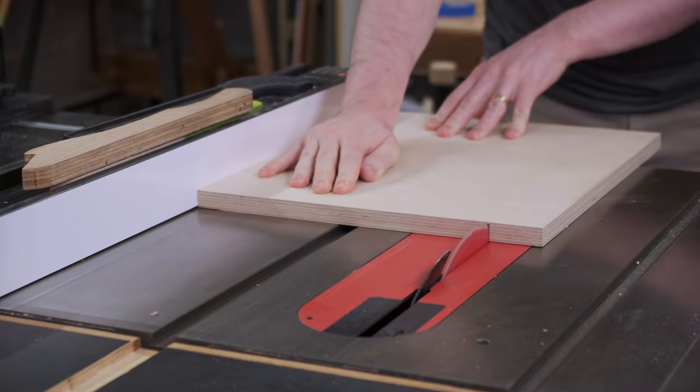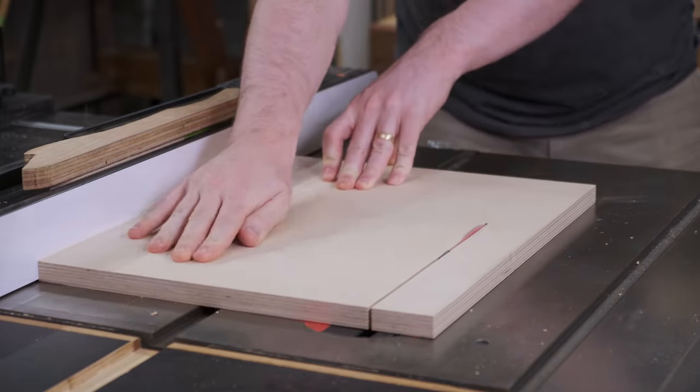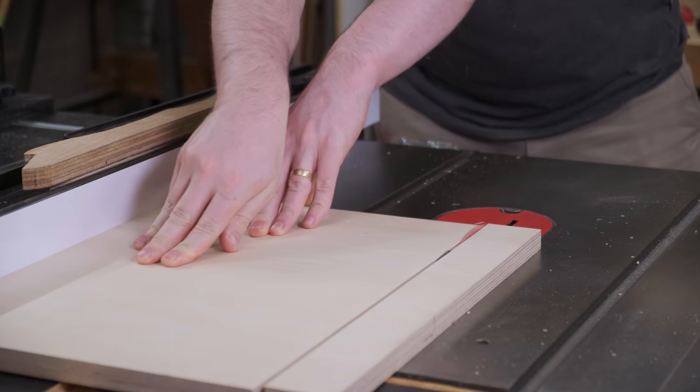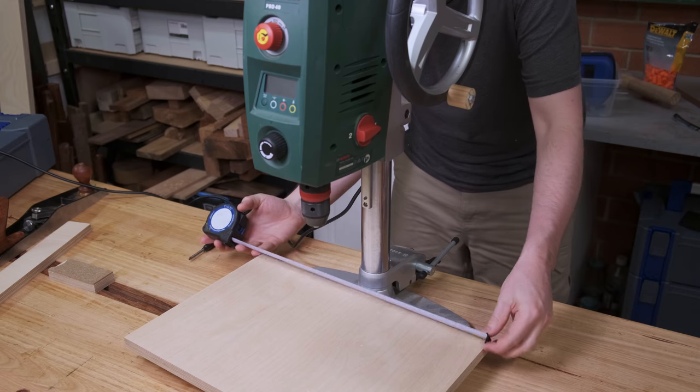This is a very simple drill press table. An off-cut piece of plywood from a previous project is all that's needed and it gets ripped down to size. The off-cut from this will get used later on.